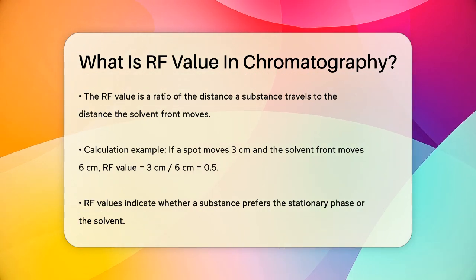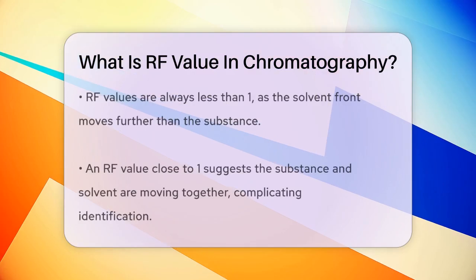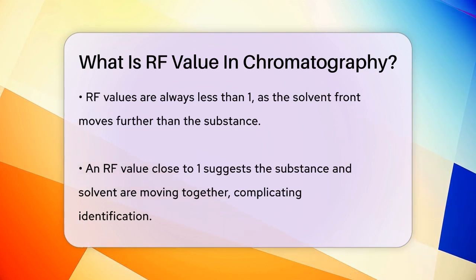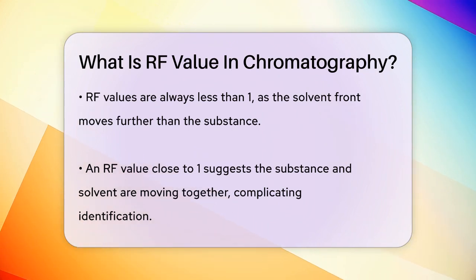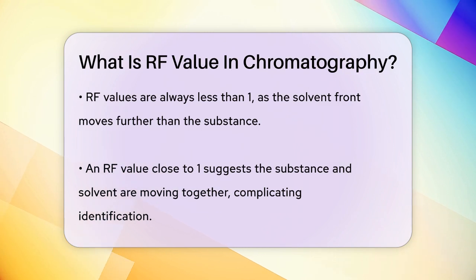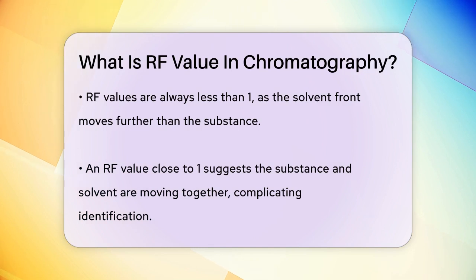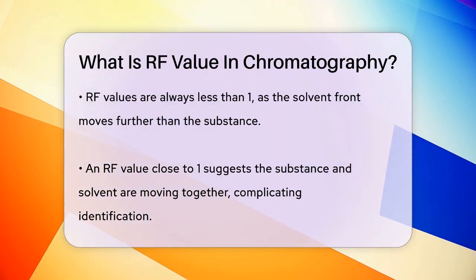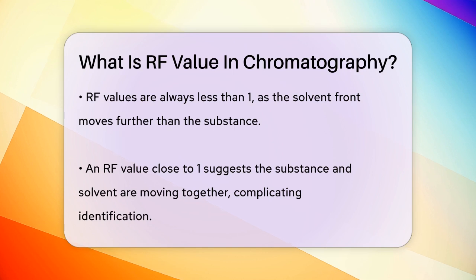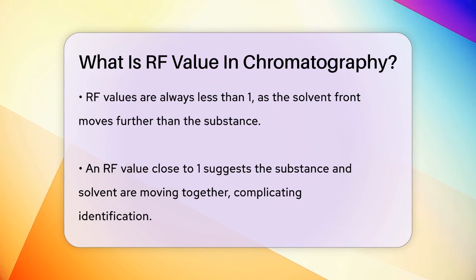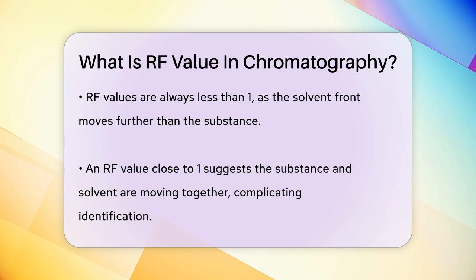RF values are always less than 1 because the solvent front always moves further than the substance. If an RF value is close to 1, it means the substance and the solvent front are traveling almost together, which isn't very useful for identification. The polarity of the substance also plays a big role. More polar substances will stick more to the stationary phase, like water molecules in the pores of the filter paper, and thus travel less distance, resulting in a lower RF value.